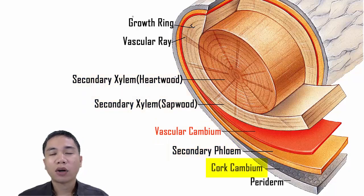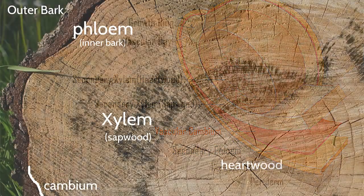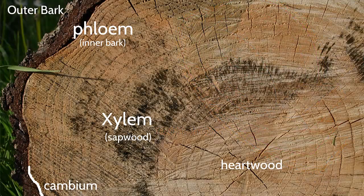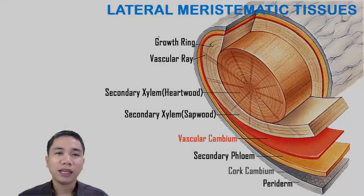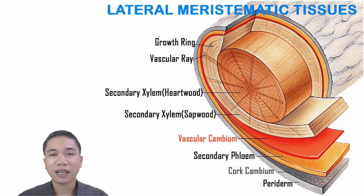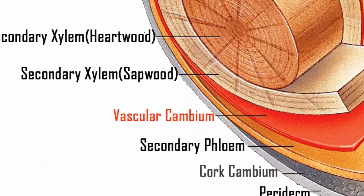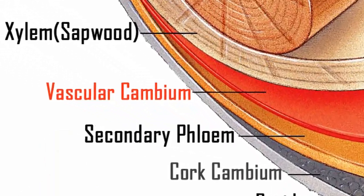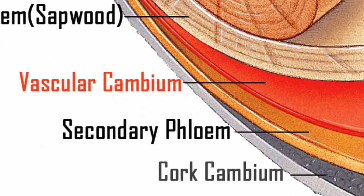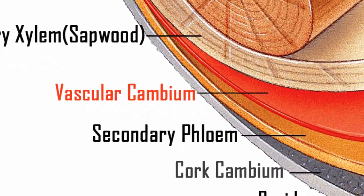And the cork cambium produces the periderm, a component of the bark. For now, it is enough to learn that woody tissues are a result of secondary growth and supplied by the cells from the lateral meristems — again, the vascular cambium and the cork cambium.